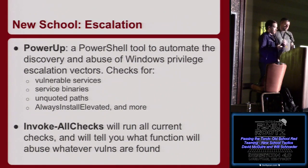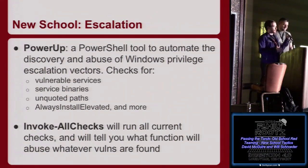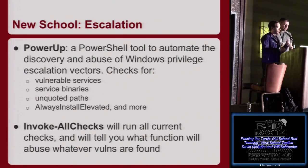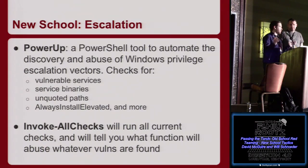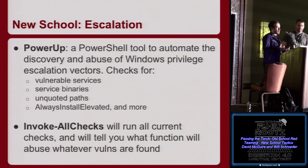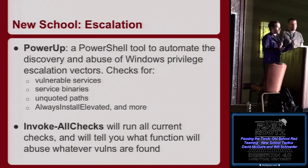PowerUp is a PowerShell tool that automates a lot of these privilege escalation vectors. The Invoke-AllChecks function will run every specific check in the entire script — checking for vulnerable services, vulnerable service executables, services that always run elevated, all that kind of stuff. What's nice is that you can stay entirely off disk with PowerShell, and it's AV-safe. There are also functions that let you abuse whatever you find — if you find a vulnerable service, you can abuse it to add a local admin. It has pre-compiled service binaries already in the script, and you can do all this without touching disk.